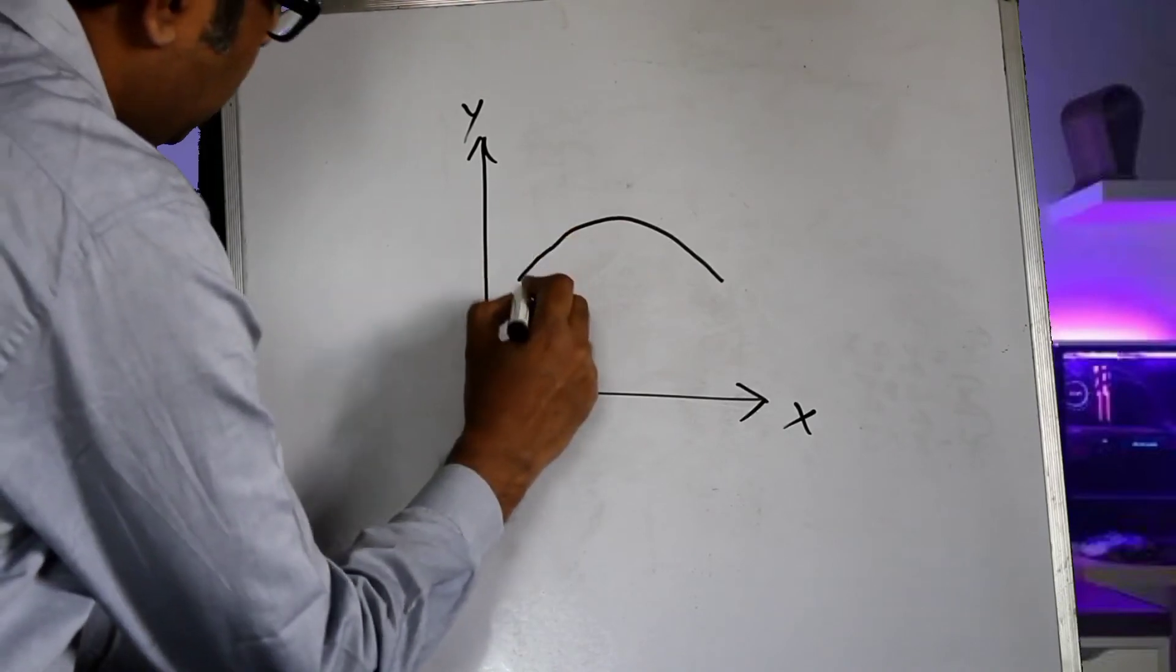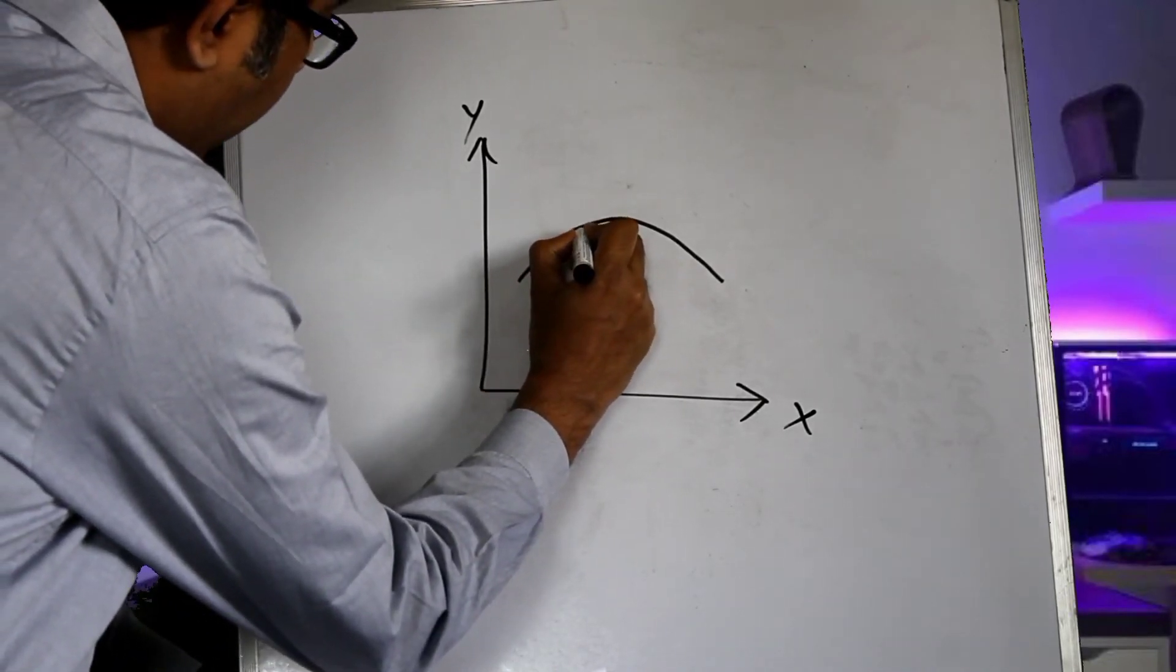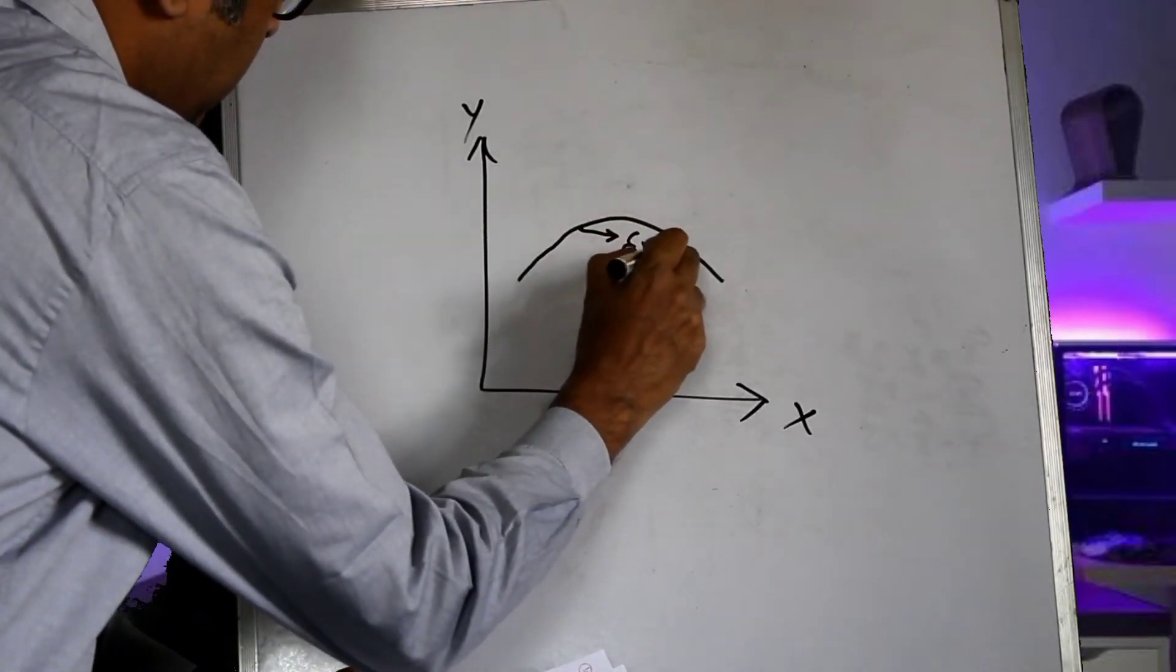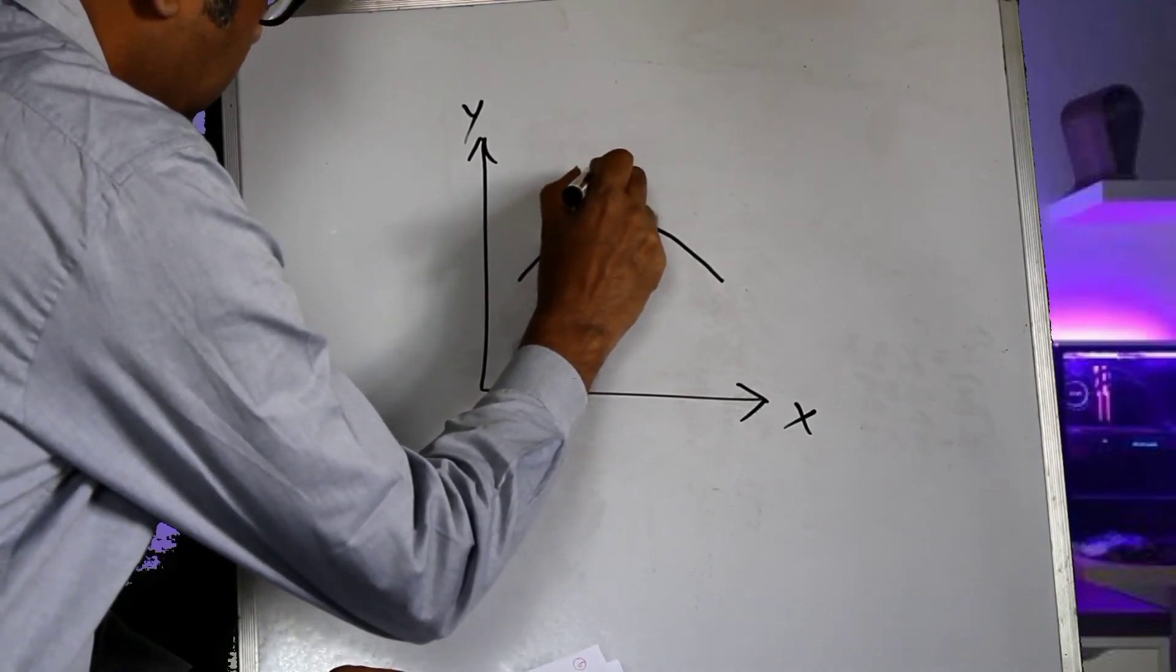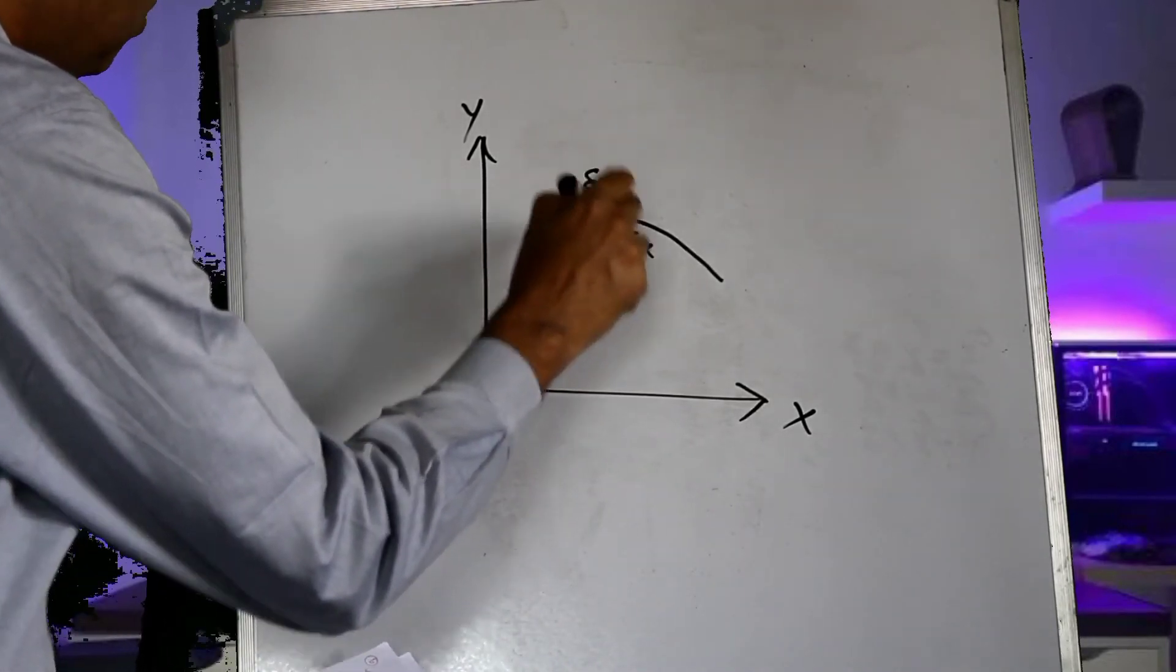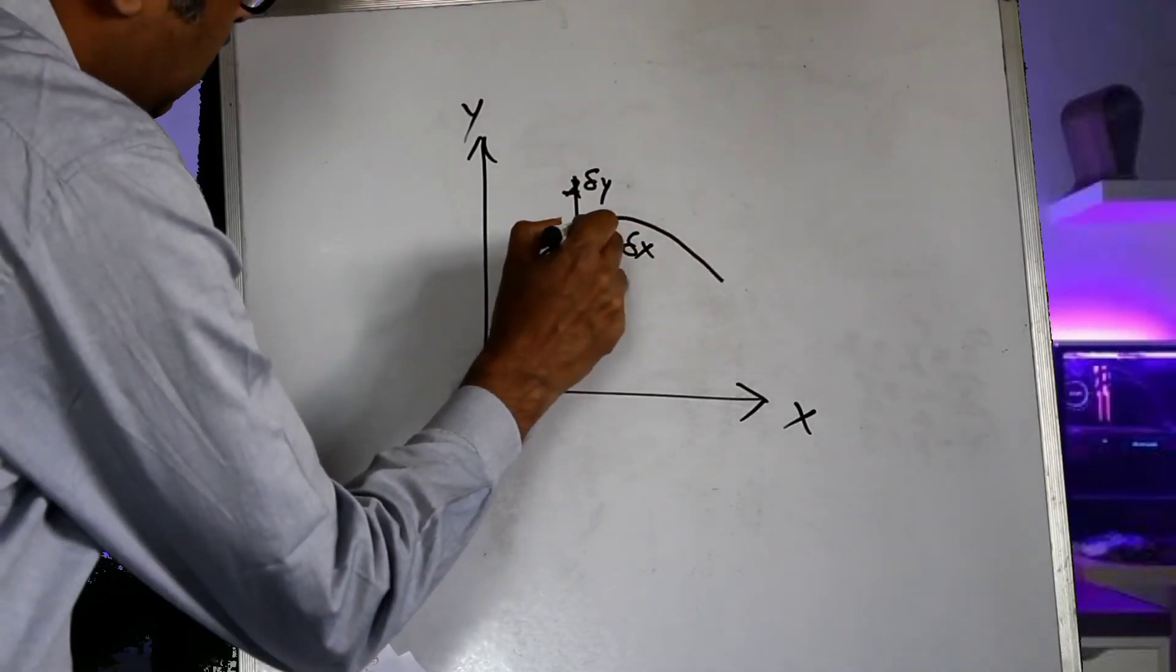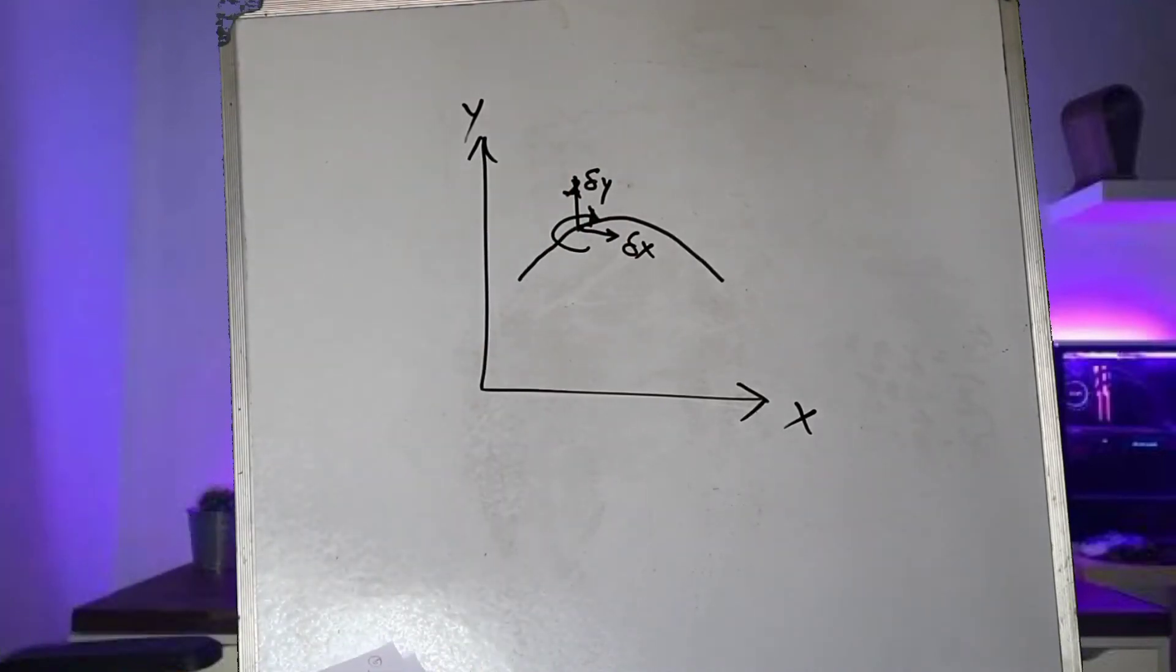So this would mean that at any point of time, the ball would have a displacement in the x direction and a displacement along the y direction. And along with it, it will also have a rotational motion as it goes along this parabolic path. So in addition, the ball would also have a rotational motion.